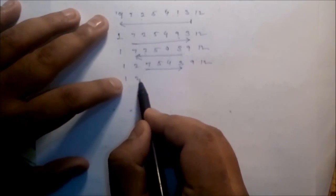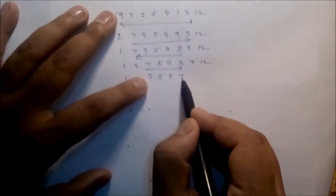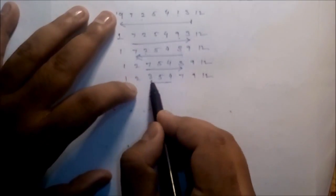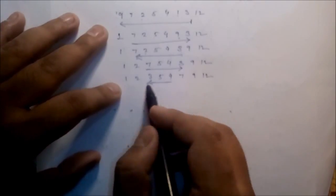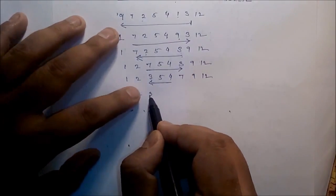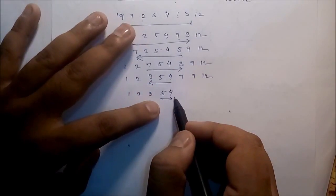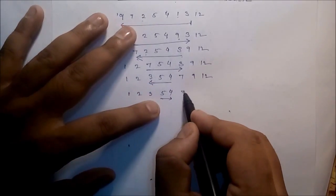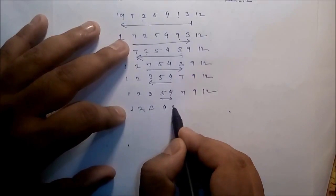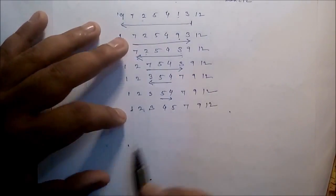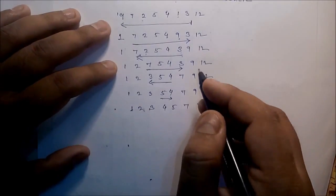Now check this particular part only and identify the maximum value. The output will be: one, two, three, five, four, seven, nine, twelve. Then check and identify the minimum value, then identify the maximum value to get the final answer: one, two, three, four, five, seven, nine, twelve.